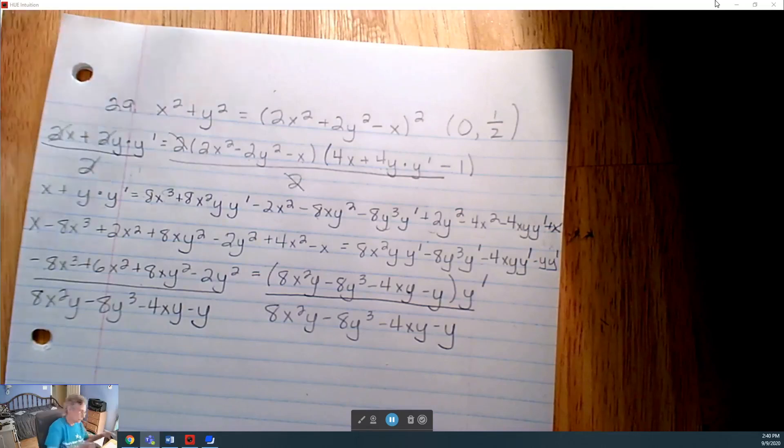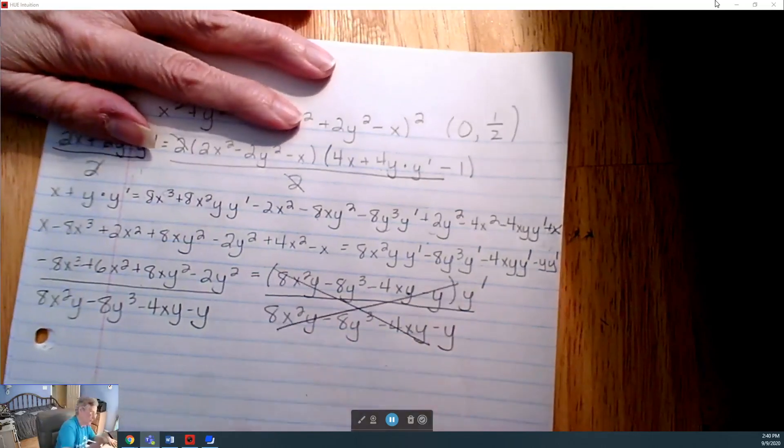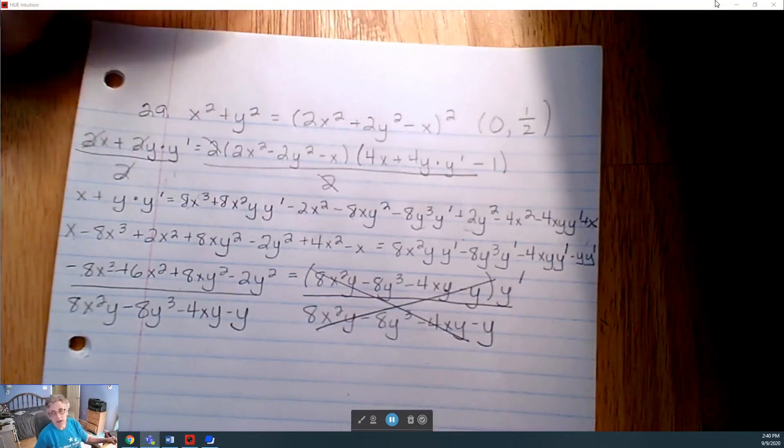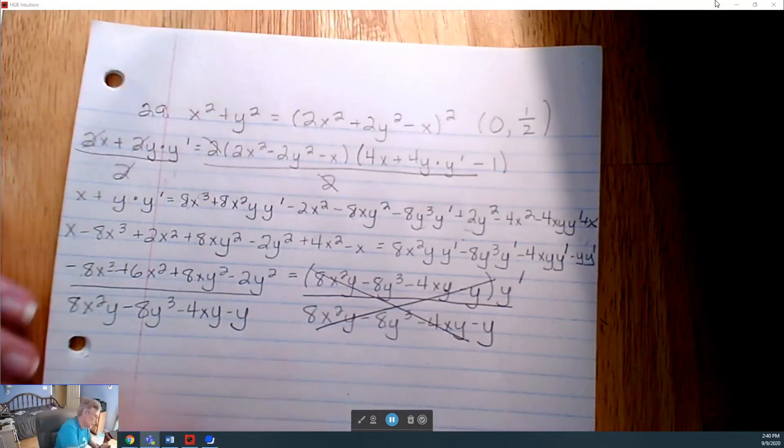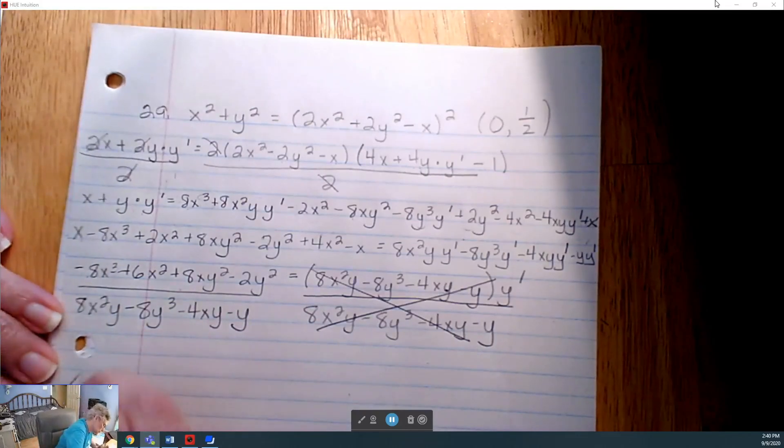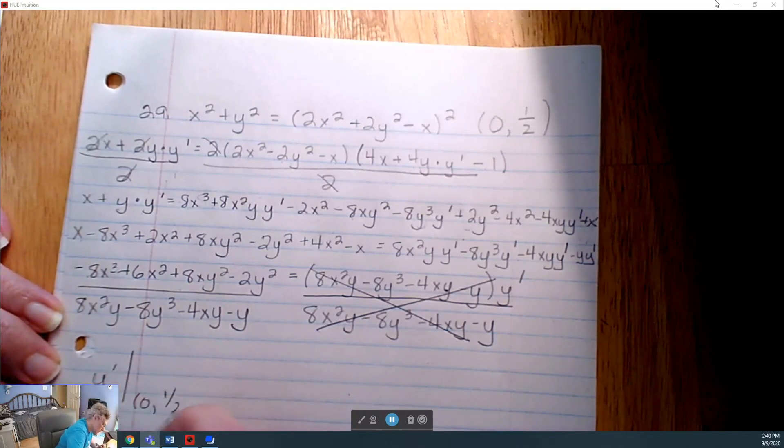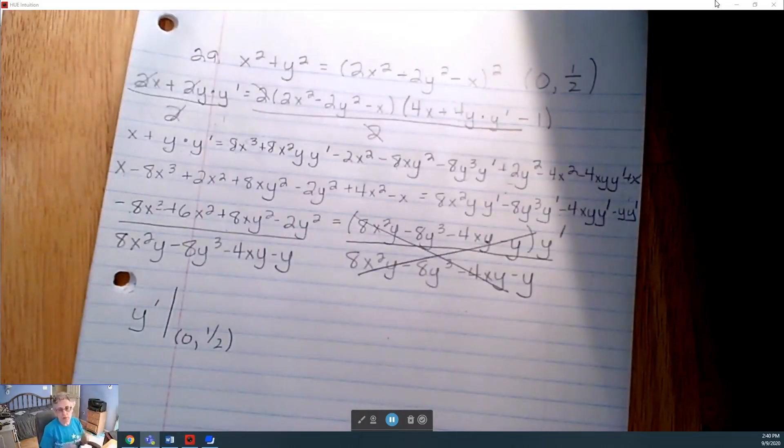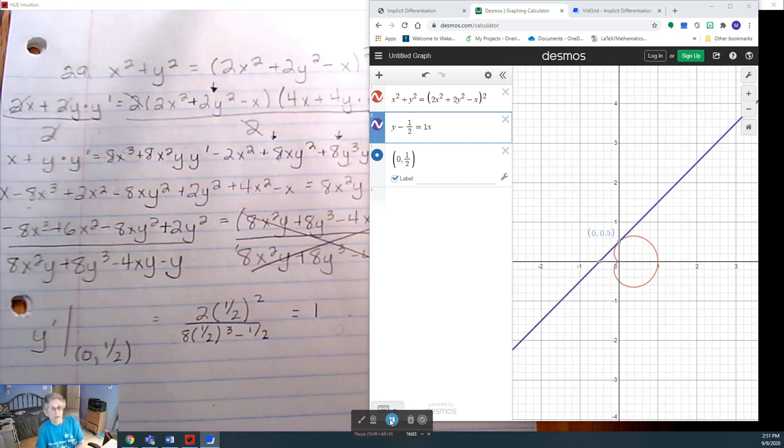We're done finding the derivative. Now you have to plug in zero and a half. So y primed evaluated zero and one half. You don't need to watch me do arithmetic. So I'm going to plug all this in and graph it. And I'll meet you back here in a minute.